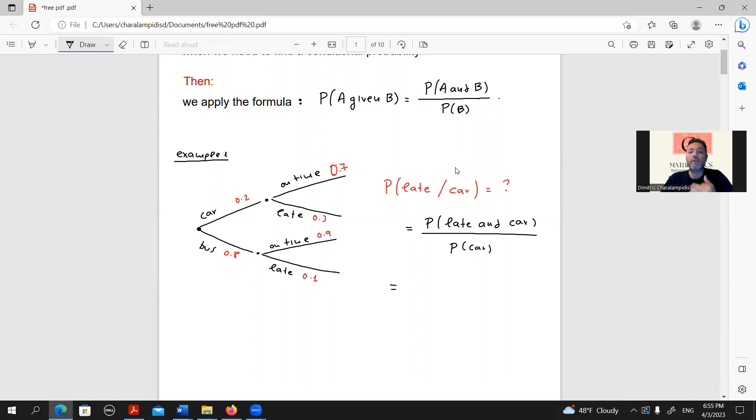The probability of late and car is the first type of exercise in which we care for a specific road, so its probability would be 0.2 times 0.3. The probability of car is just the 0.2. So, here, by simply simplifying, we would get 0.3.